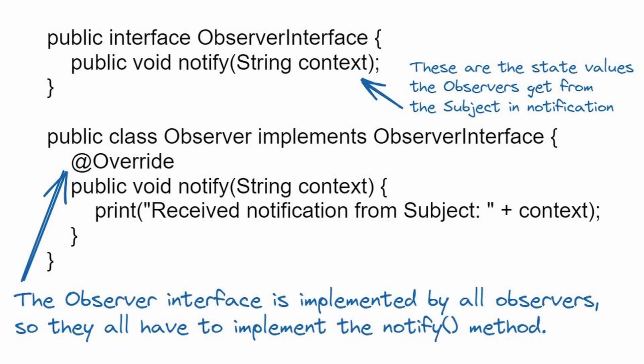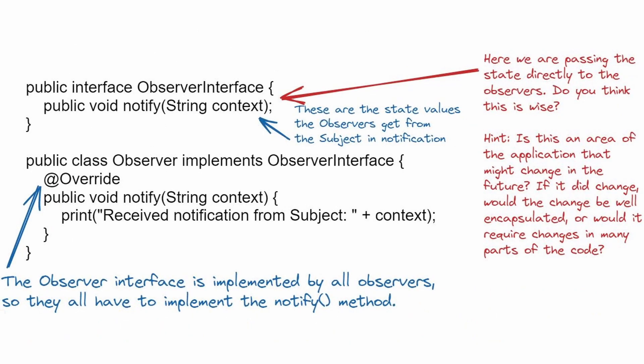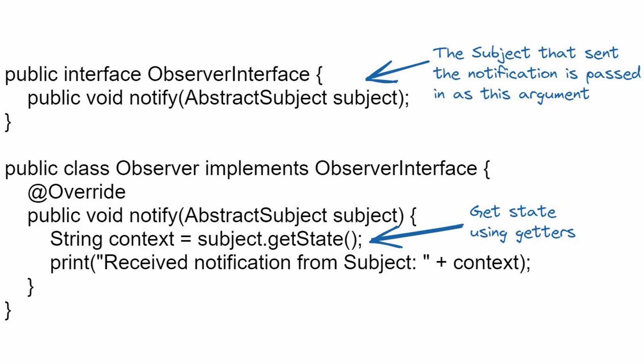Looking at the notify method of the observer interface — concrete observers will implement this notify method. Observers would need some context data about the event, which can be passed as an argument. However, if the type of context changes or new data needs to be passed, it would require changes in many parts of the code. Another option, which the Java-provided observer pattern library uses, is for the subject to pass itself as an argument in the notify method. Upon receiving a notification, the observer can then fetch any data directly from the subject object using the subject's getters.